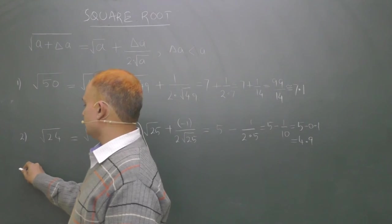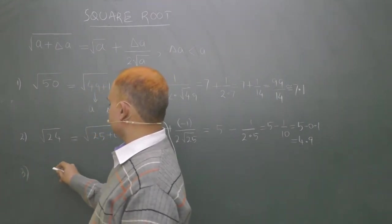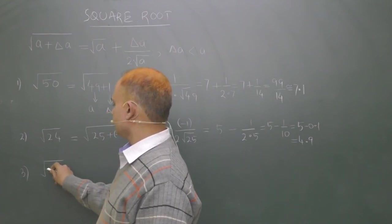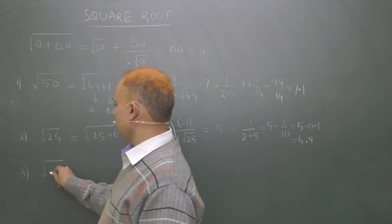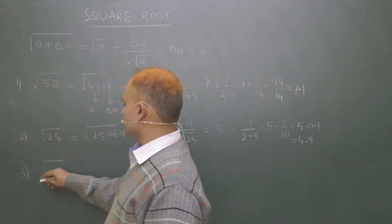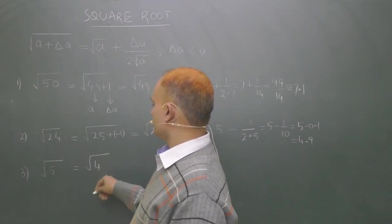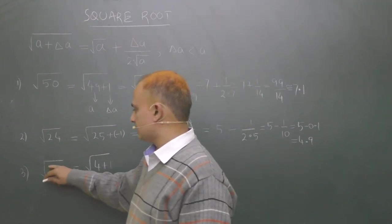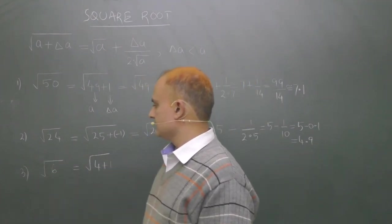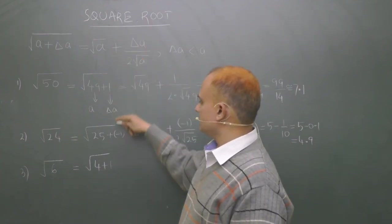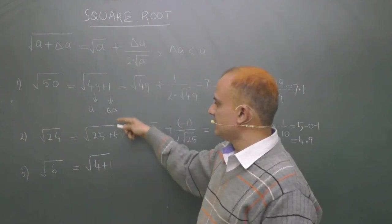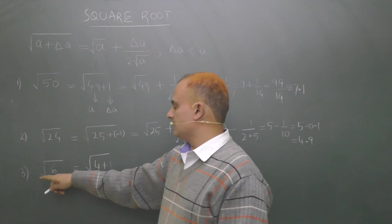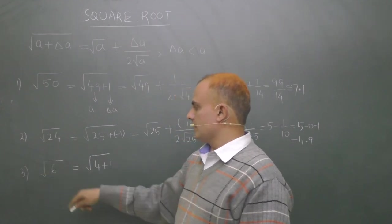Similarly, let us consider another example. For example, we have a number 5, or you can write root over 4 plus 1, or you may consider another number. Let us consider 6, because in all the cases, surprisingly, we are seeing delta a is either 1 or minus 1. So let us change it.